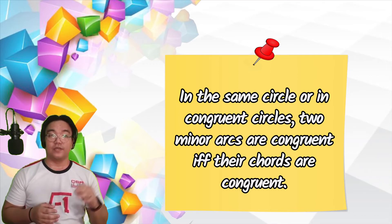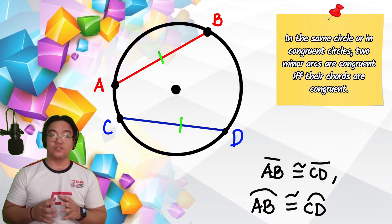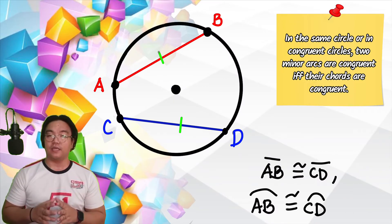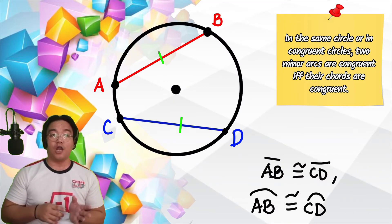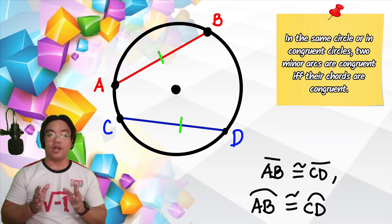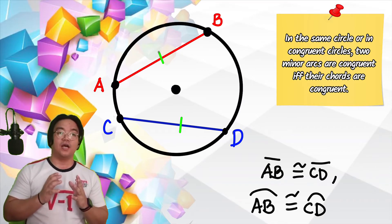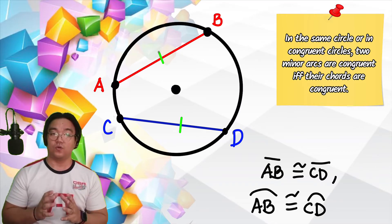In this given figure, since chord AB is congruent to chord DC, then arc AB and arc CD are also congruent.